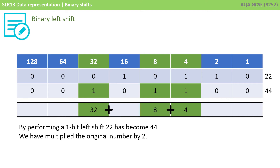So, if we left-shift the number 22 one place, what we get back is 32 plus 8, which is 40, plus 4, which is 44. So, 22 has become 44. In effect, we've multiplied the number by 2.